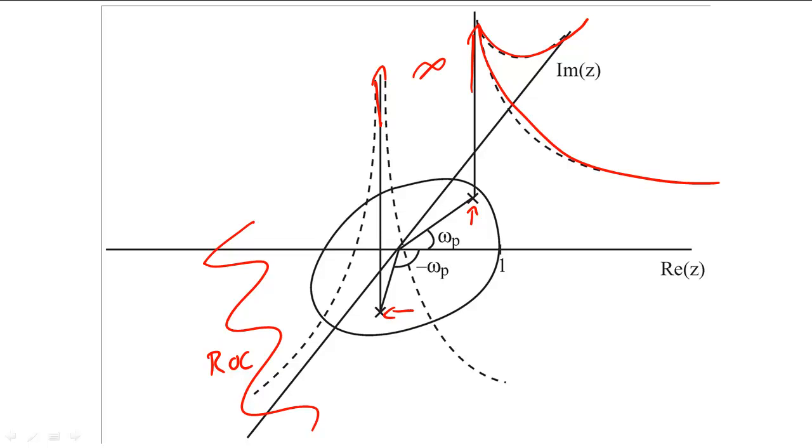To find the frequency response of the filter, we want to find the height of this canvas at the unit circle. As you might guess, the magnitude of the frequency response will be greatest where the poles are closest to the unit circle.